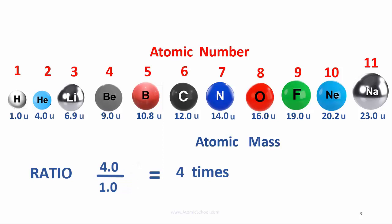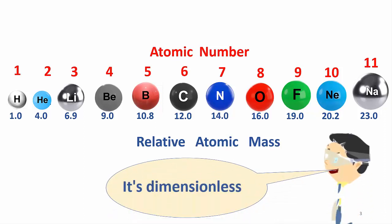Although the masses have a unit, the ratio of the masses doesn't. This ratio is helium's relative atomic mass. The U's are dropped now because all the numbers are ratios without units. A sciency way of describing relative atomic mass is to say that it's dimensionless. It doesn't have a unit.